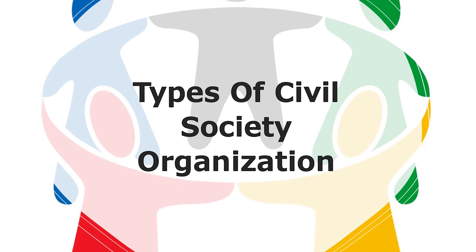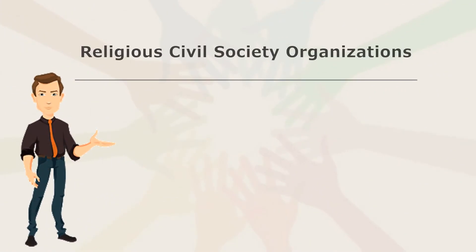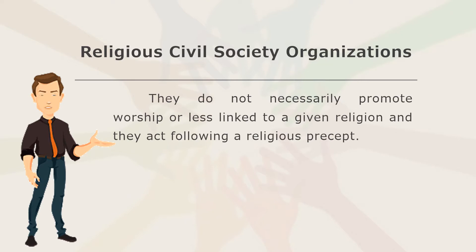Let us look upon the types of civil society organizations. CSOs take a variety of forms. Here are the five main types of CSOs and two hybrid organizations, which are civil organizations but are not completely separated from states or business. The first type are religious civil society organizations. They do not necessarily promote worship or are solely linked to a given religion, and they act following a religious precept. Their fields of intervention include education, health, emergency relief, and basic needs assistance — a good example of which is the Philippine Red Cross.